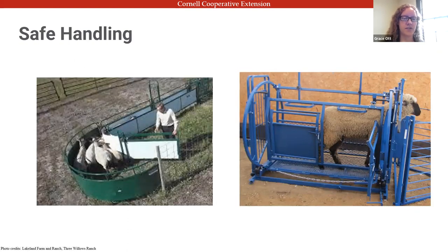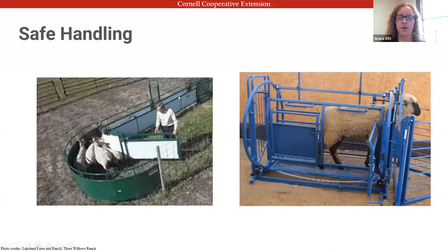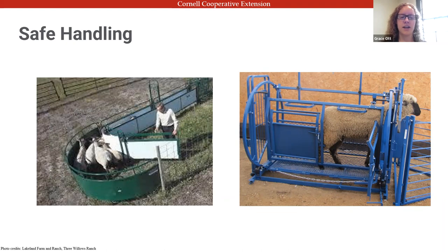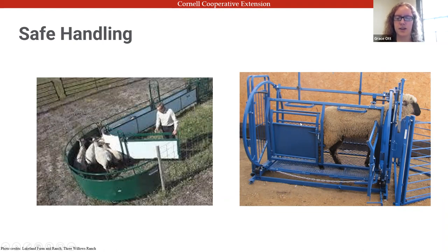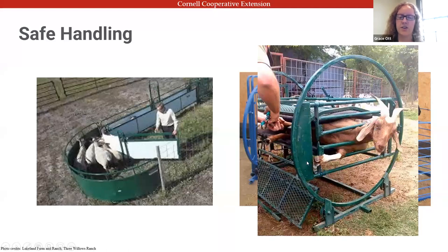There are different ways to safely handle these animals. Chute systems include a corral and crowd pen where animals go through one by one into a squeeze chute, making it much easier than trying to catch them in pasture. Here you can see a sheep in the chute where you can administer medicine, check feet, and so on. This is also a turntable chute — if you need to get to their hooves you can simply turn them on their side.